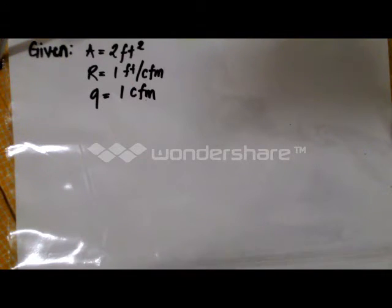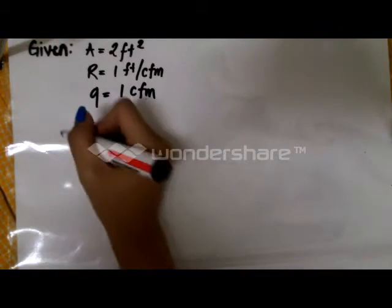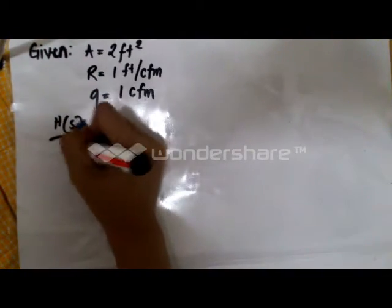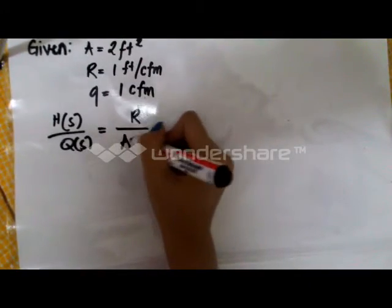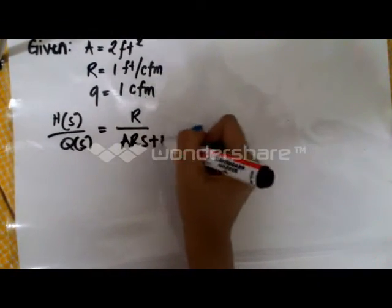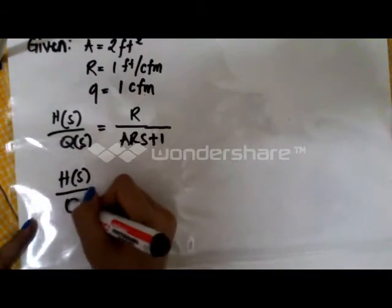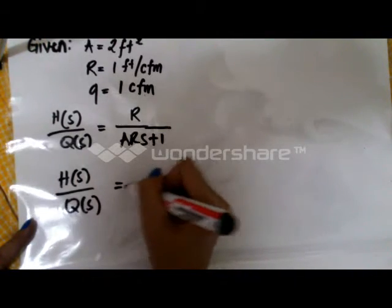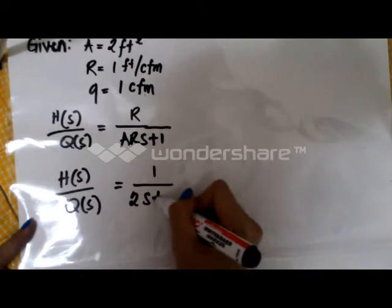First and foremost, we write the given. Since this is a problem operating at steady state, we can start with the transfer function for a liquid level system given by equation 5.8: H(s) over Q(s) is equal to R over (ARs + 1). Substituting from the given, our transfer function becomes H(s) over Q(s) equal to 1 over (2s + 1).